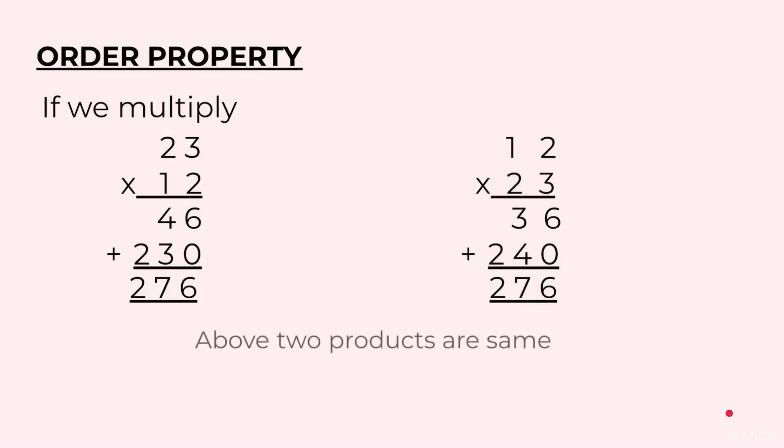If we multiply 23 into 12 we get 276. And if we multiply 12 into 23 we still get 276. Above two products are same.